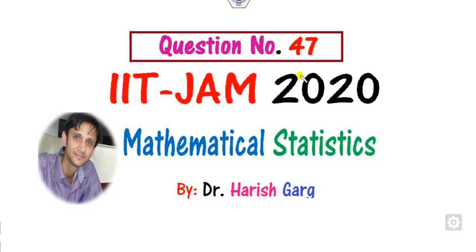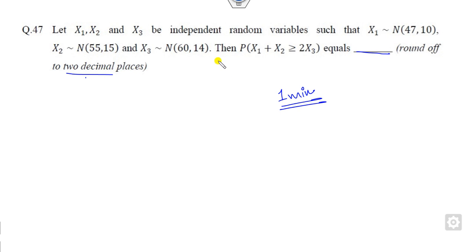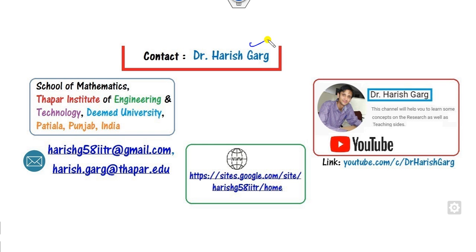Hello everyone, welcome to this next class. This is question number 47 related to IIT JAM 2020 Mathematical Statistics. You have to write your answer filling in the blanks up to two decimal places. These are very simple questions — I guarantee you can solve this type of question within one minute. You have to simply read the statement very carefully.